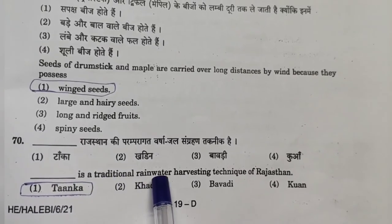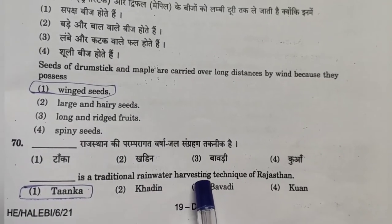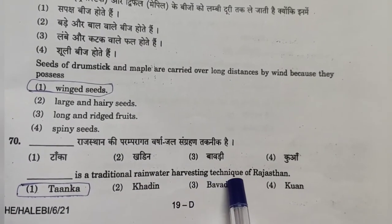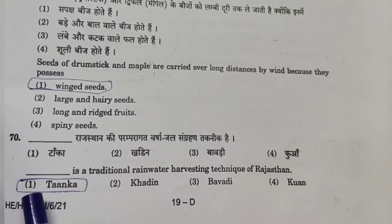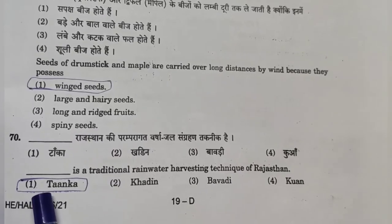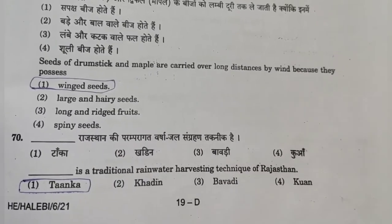Question 70: What is the traditional rainwater harvesting technique of Rajasthan? Answer: Option 1 — Tanka.